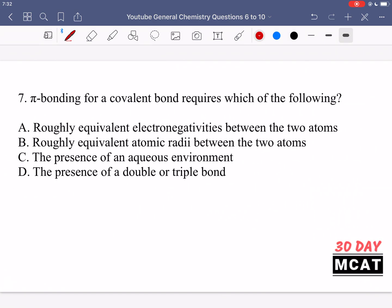In question 7, it says pi bonding for a covalent bond requires which of the following? So we are talking about pi bonding. We know that when we have between two atoms a single bond, that's going to be a sigma bond. But then if we have additional bonds, those are caused by unhybridized p orbitals coming together and forming a pi bond. Option A is saying pi bonding requires roughly equivalent electronegativities between two atoms. No, that's not correct.